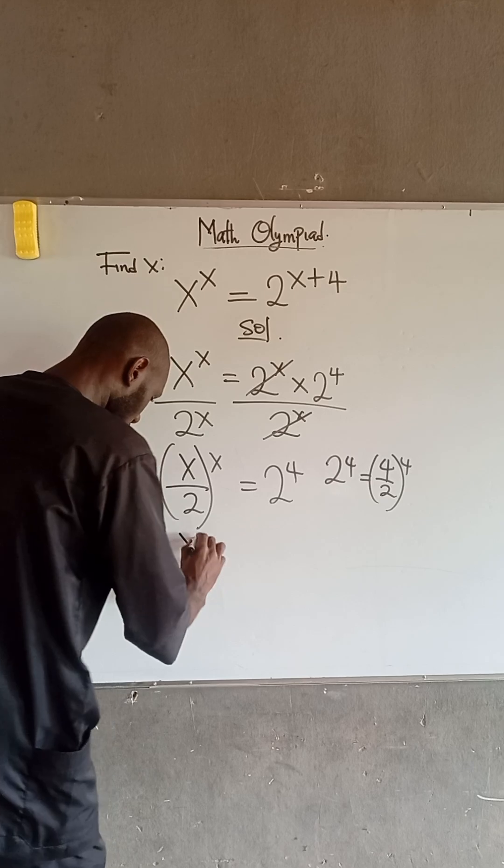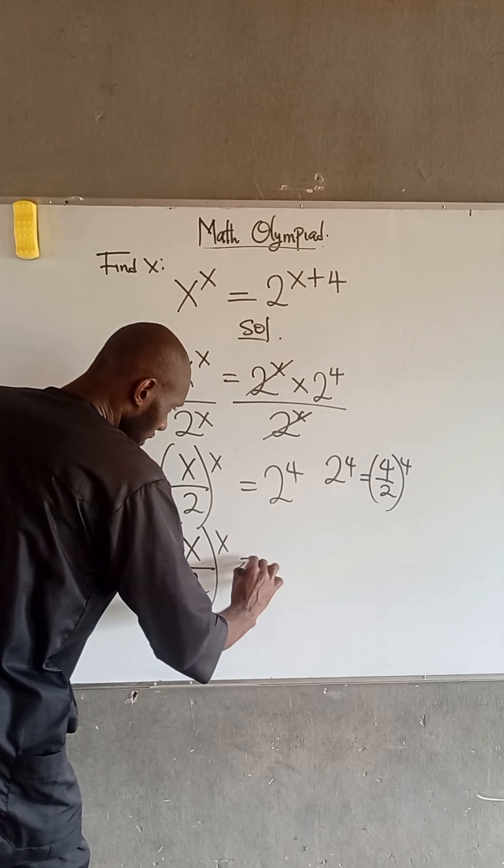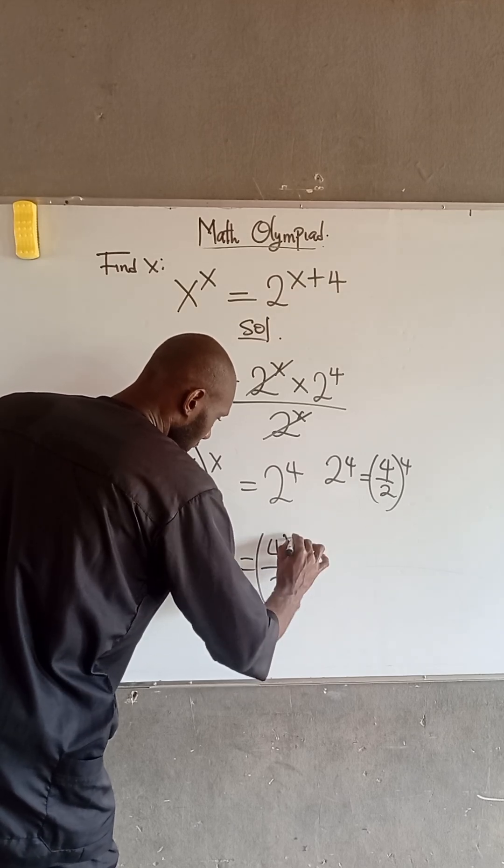So, therefore, this becomes x divided by 2, all raised to the power of x, is equal to 4 divided by 2, all raised to the power of 4.